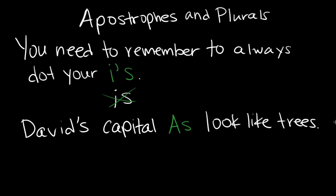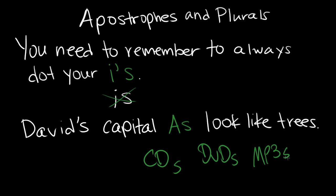Yeah, that's the only exception, that's the only time you use apostrophes to form the plural — no other time. So if you're talking about CDs, or DVDs, or MP3s, or whatever you kids are listening to these days, it doesn't matter. There's no need for an apostrophe in any of these places, because that's pretty clear. You just use a lowercase s. But if you're trying to talk about multiple lowercase letters, then you use an apostrophe.